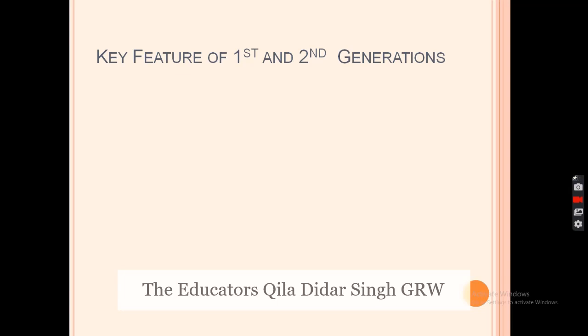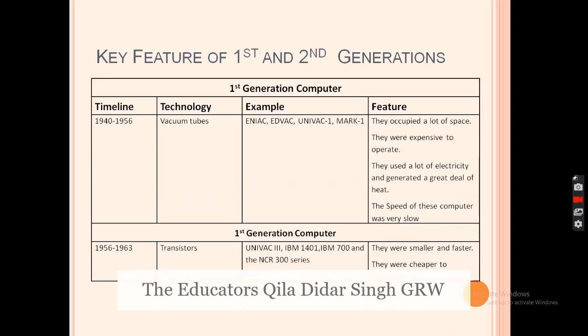Today we discussed just two generations, and later we will discuss the third, fourth, and fifth generations. Now we see the overall picture of first and second generation computers. First generation: era 1940 to 1956, technology — vacuum tubes. Second generation: era 1956 to 1963, technology — transistors, along with their examples and features.